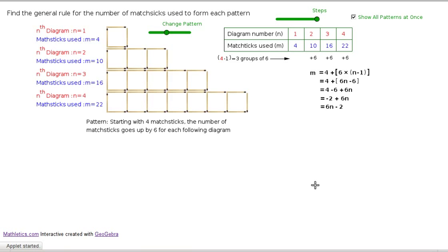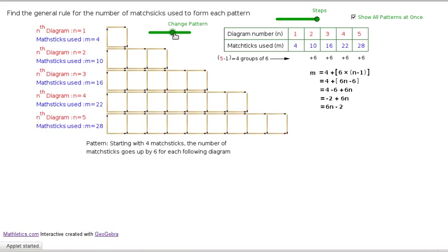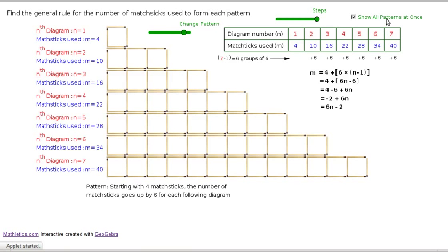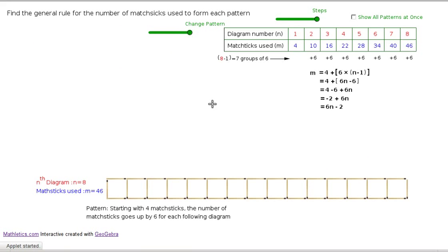So you can see that the rule works for each of the patterns that we've drawn. Checking them one at a time. And so there we've taken a reasonably complicated pattern, and we've reduced it into one line. Number of matchsticks is 6n minus 6.